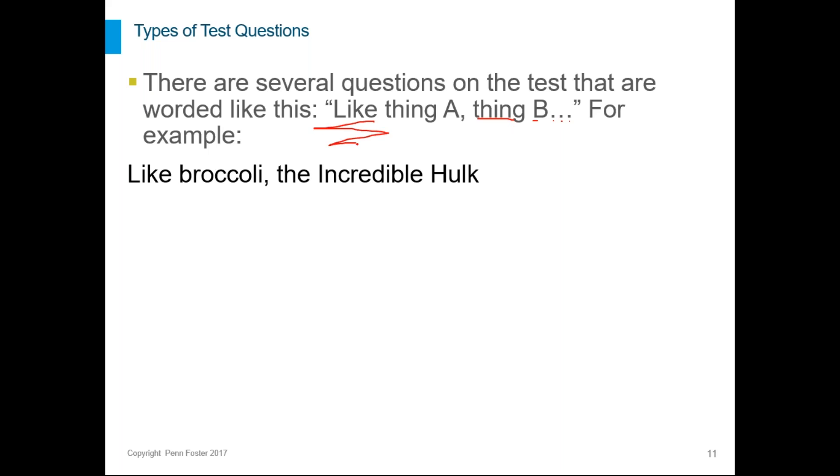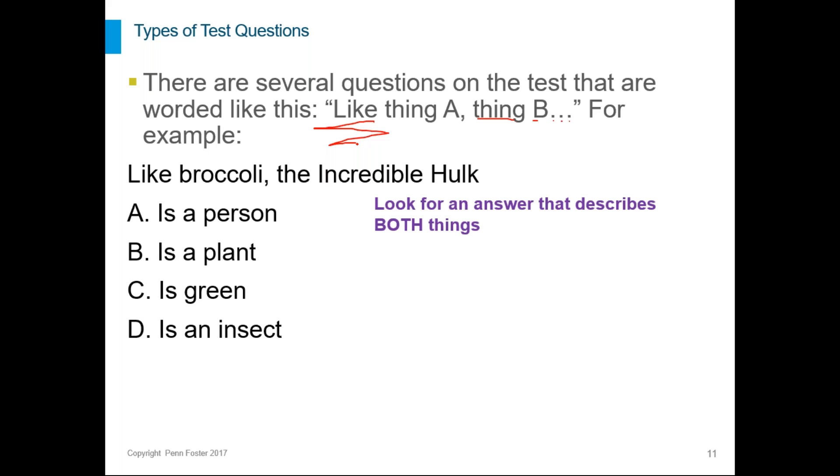So what's our options? Like broccoli, the incredible hulk, is a person, is a plant, is green, or is an insect? Well, we're looking for an answer that describes both things. Okay, we're finishing the sentence for thing B. Okay, the incredible hulk, blank, blank, blank. So it can't be B because the incredible hulk is not a plant. It can't be D, the incredible hulk is not an insect. And then how about these? Like broccoli. So something that's true about the hulk and broccoli. Well, broccoli is not a person. The only one that's true is C. They are both green.